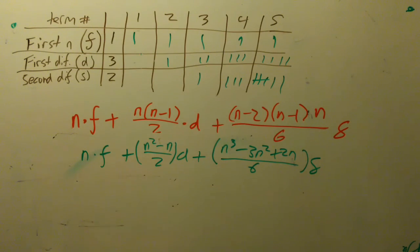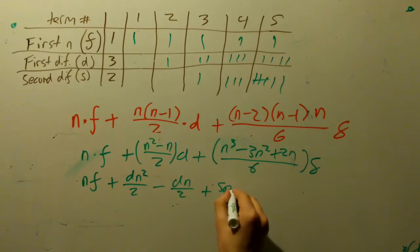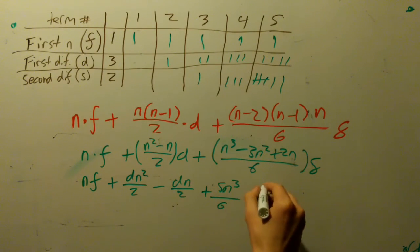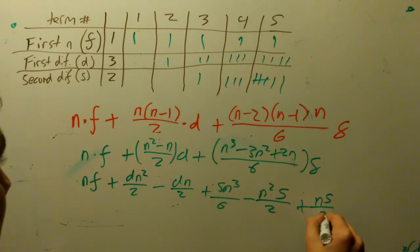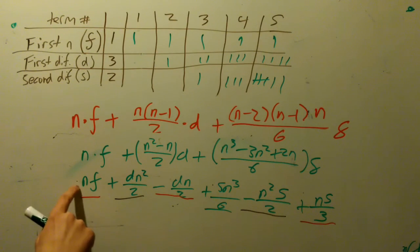From this point, I'm going to start distributing. So now we're going to have nf plus d n squared over 2, s n cubed over 6, minus, because 3 over 6 is 1 half, n squared s over 2, plus 2 over 6 is 1 third, ns over 3. At this point, I've underlined all of the terms according to the power, all of the n to the first are red, all the n squareds are purple, and all the n cubes are still green. There is only one green, and we'll start with s over 6 times n cubed.